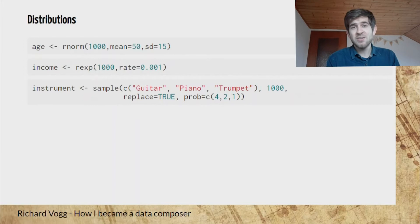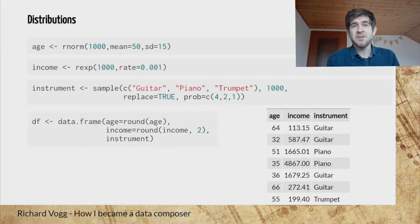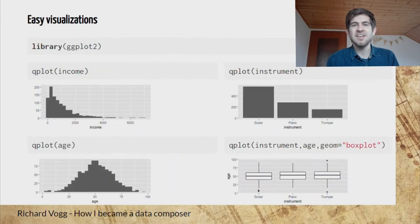We can combine all those variables in a data frame and then we have our first, in this case, nonsense data set ready. Then we can go and take a look at the data and check if what we composed is actually what we wanted to compose, if it makes sense.